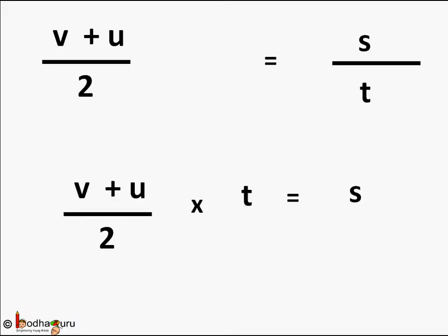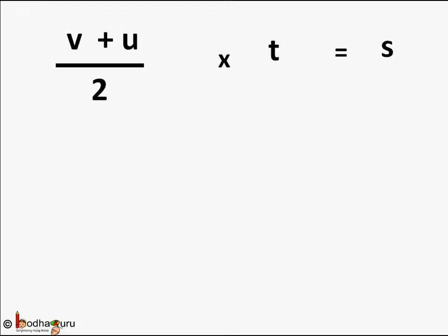So taking t to the other side we get v plus u by 2 into t is equal to s. And if we substitute t by v minus u by a that we got earlier, this becomes v plus u by 2 into v minus u by a is equal to s.